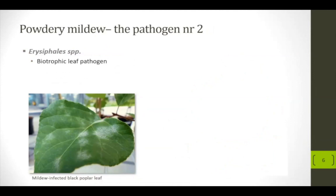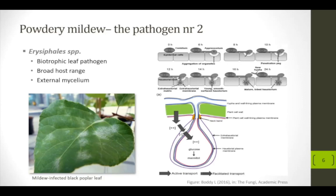The second leaf pathogen I will talk about today is the powdery mildew, which is also a biotrophic leaf pathogen but has a much broader host range than the rust fungus, affecting many trees, especially oak. In contrast to the rust fungus, this fungus grows an external mycelium superficially on the leaf surface but also makes haustoria — structures that go into the plant cell — and this is where the fungus gets its nutrients: amino acids, sugars, and all that kind. What is interesting here is mannitol, a sugar alcohol that will play quite an important role later.